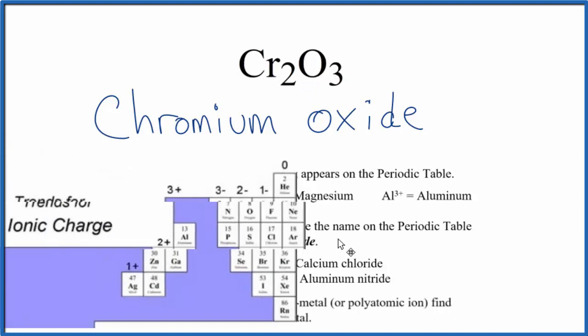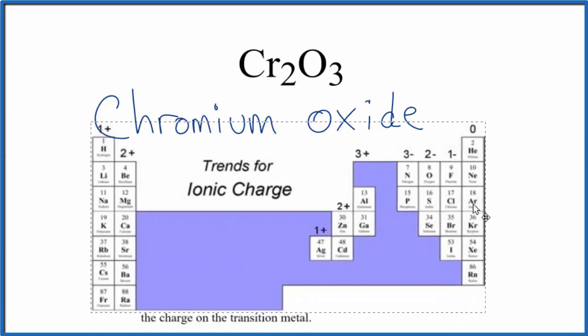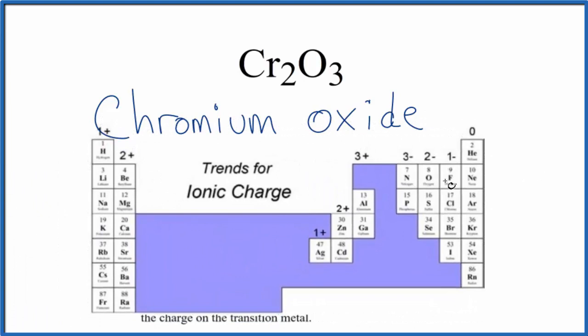So we can go to the periodic table and look up the charge on oxygen. Oxygen right here has an ionic charge of 2-. So when oxygen bonds, it will form ions with a 2- charge. Each of these three oxygen atoms has a 2- ionic charge.